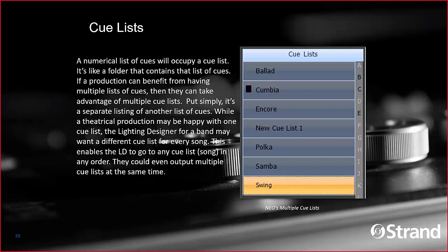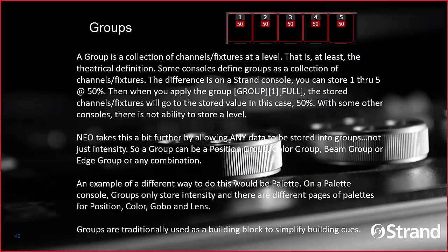A cue list is simply a container of cues. You often have environments that use multiple cue lists when you want each event to start with cue 1 — a cue list per song for a band, or a cue list per dance piece for a dance company. However, if you're doing a theatrical production you may only need one cue list, and there are plenty of Broadway shows that have only ever used one. It's a great tool when you need it, but it can complicate things if you use multiple cue lists when you don't really need to.